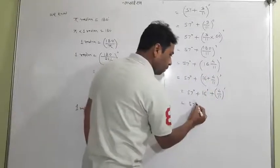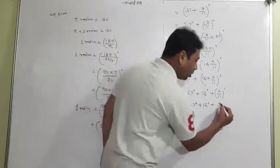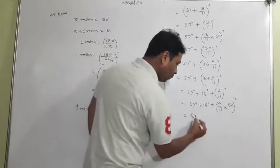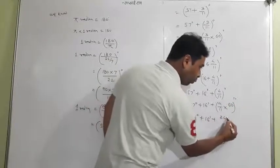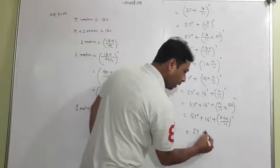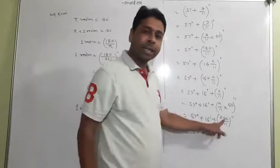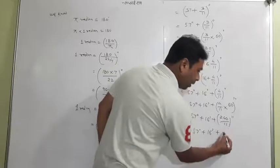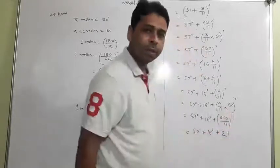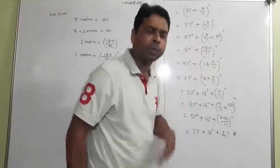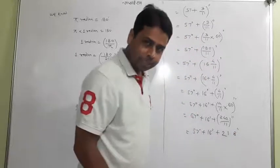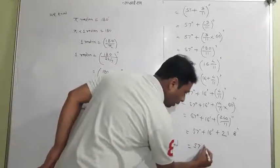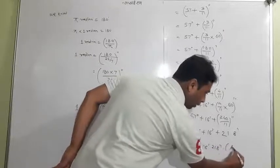The partial part 4/11 minutes is converted to seconds by multiplying by 60: 4/11 × 60 = 240/11 seconds. Since 240 is not exactly divisible by 11, this is an approximate answer. Dividing: 11 × 21 = 231, remainder 9 — approximately 21.8 seconds. Combining all: 1 radian equals approximately 57 degrees 16 minutes 21.8 seconds.